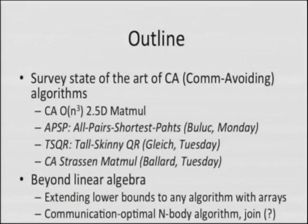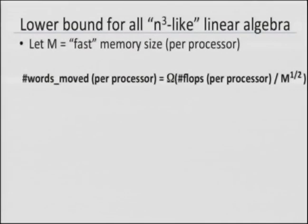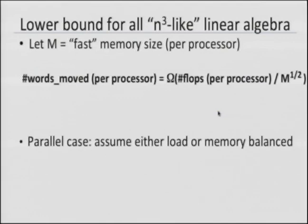Let me survey the lower bounds for direct linear algebra and how to attain them. This holds for anything that 'smells like three nested loops' — we have a formal definition, but your intuition is good. Let M be the fast memory size. The problem is too big to fit there, so I want to bound the communication into and out of fast memory. The words moved per processor is lower bounded by however many flops that processor does divided by the square root of its local memory size.